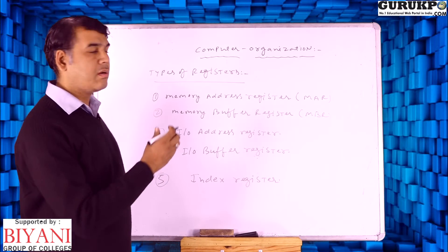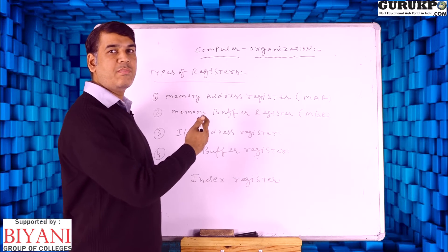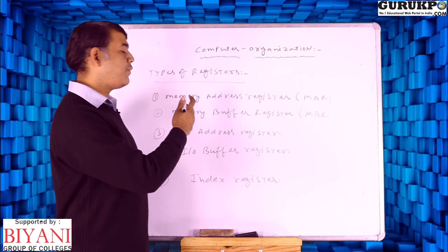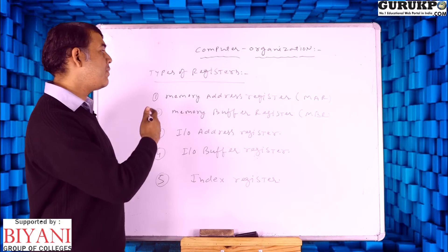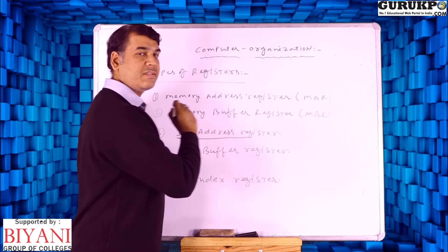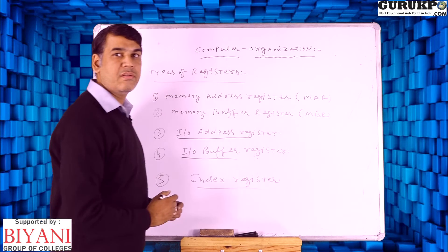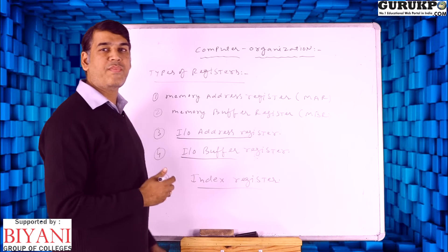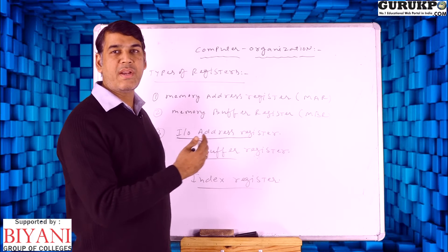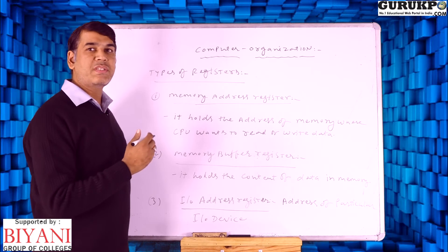After discussion on operations of registers, we can further discuss about the types of registers — how many types of registers are supported in computer organization. First of all, we have the memory address register, memory buffer register, IO address register, IO buffer register, and index register. We will discuss what operations are included inside these registers.